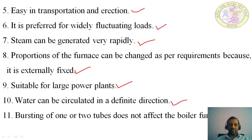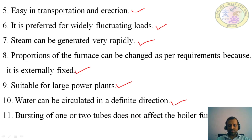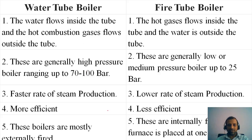Water can be circulated in a definite direction because the water tubes are fixed in a slanting position, so the flow of water is also in a particular direction. If there are parallel water tubes placed between the uptake header and downtake header, and one or two tubes burst, there is no need to stop the boiler — you can continue functioning the boiler normally.